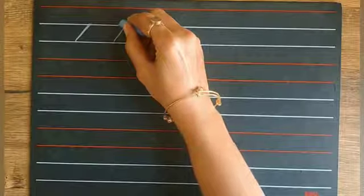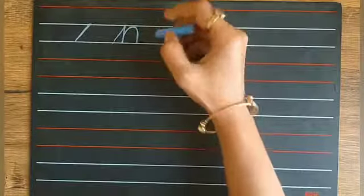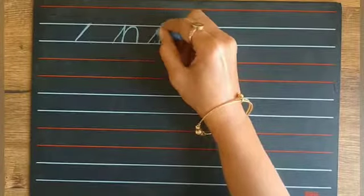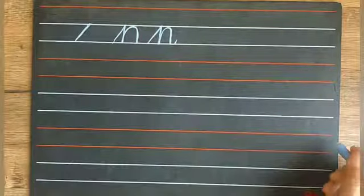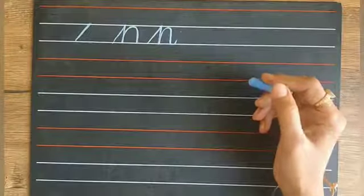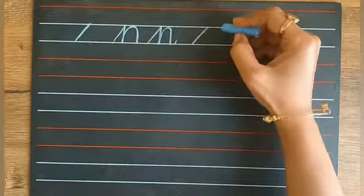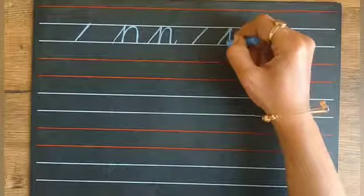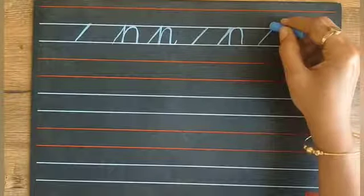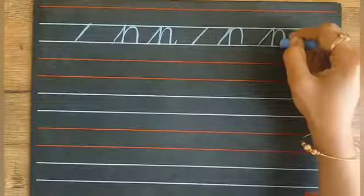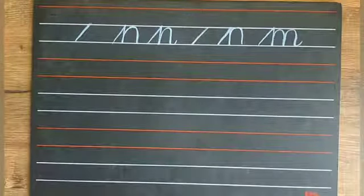In the second step, make a down curve. And in the third step, make a tail. This is letter M. Now we will write letter N. First step, make a slanting line. Second step, make a down curve. In the third step, again make a down curve. And make a tail. This is letter N.